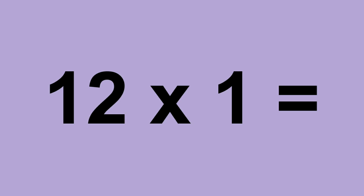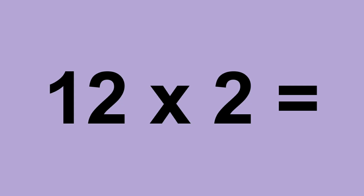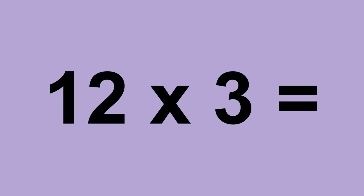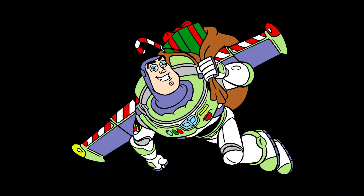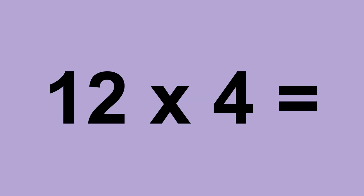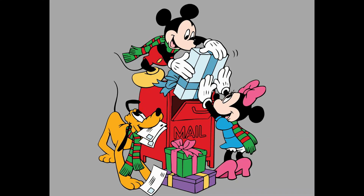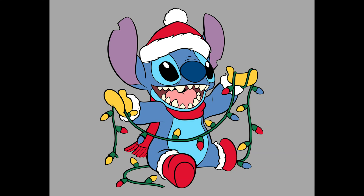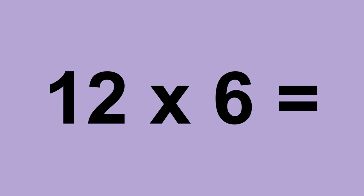Twelve times one equals twelve. Twelve times two equals twenty-four. Twelve times three equals thirty-six. Twelve times four equals forty-eight. Twelve times five equals sixty. Twelve times six equals seventy-two.